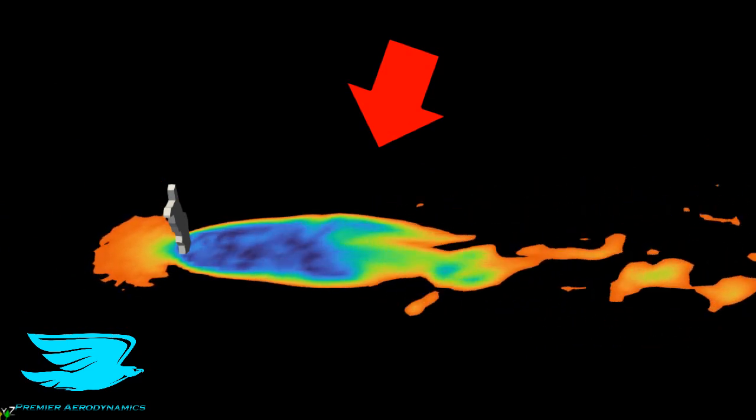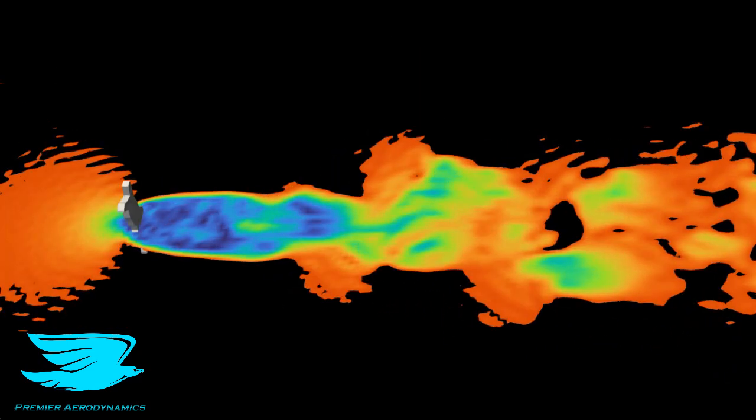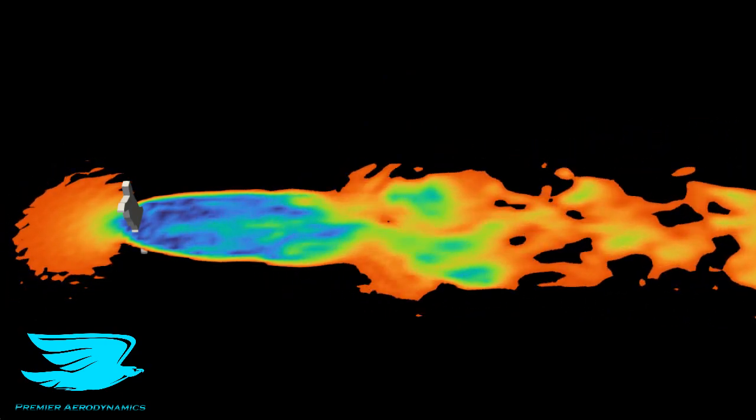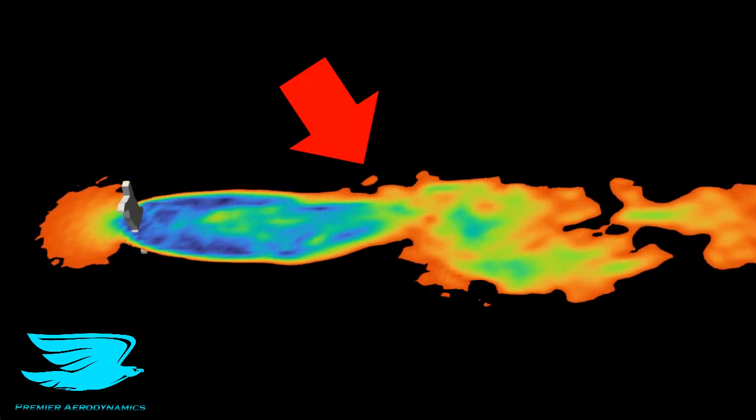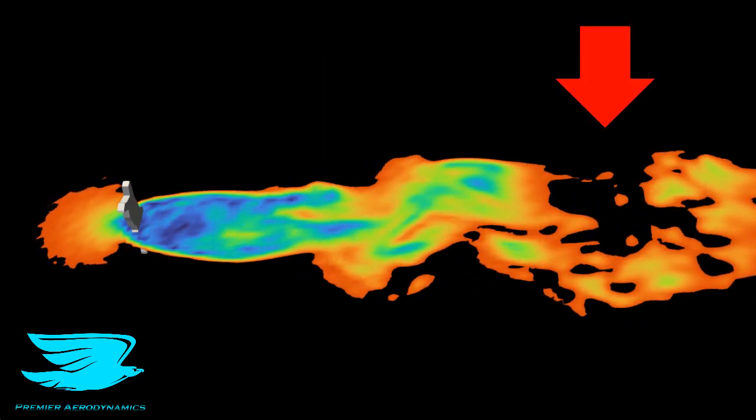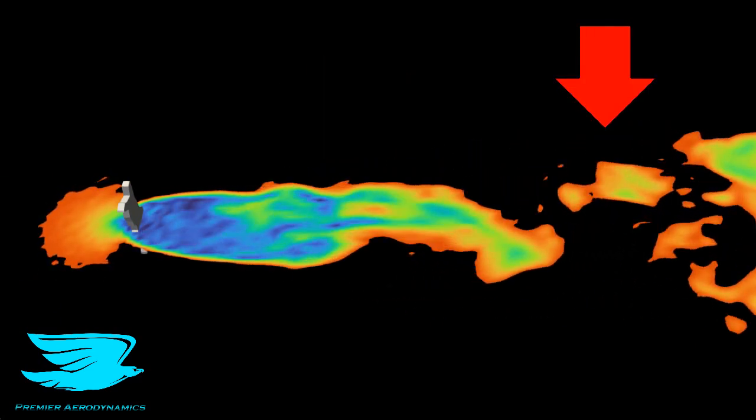This middle z-plane also has a wake that flares out a lot, but it persists downstream more, which indicates that there is a lot more drag being produced here than that former plane. Also, it seems like there is a little more of a coherent vortex shedding here.